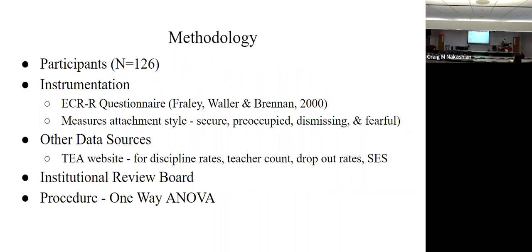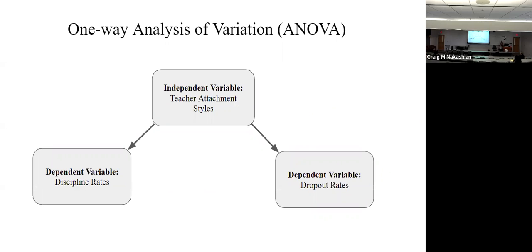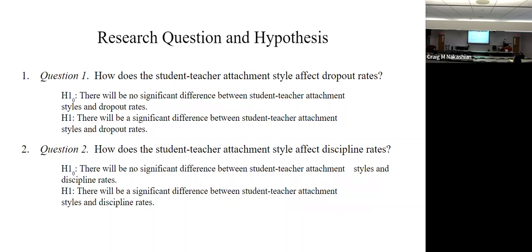I did a study with 126 participants, which was a lower number than I wanted. I used the Closed Relationship Questionnaire, and I also got data from the Texas Education Agency website, which publishes discipline rates, teacher count, socioeconomic status, dropout rates, test scores — all that is out there on TEA. I used a one-way ANOVA and measured two dependent variables. I wanted to see if the teacher attachment style was going to affect discipline rates or dropout rates. I looked at high school because that's where the dropouts occur — we don't talk about high dropouts in kindergarten. The higher up you go in K-12, the more discipline you have, so I just looked at high school only.